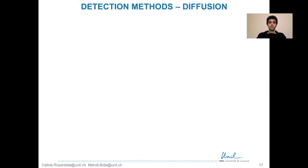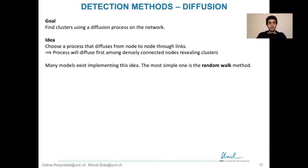Another category of community detection methods uses diffusion processes on networks. The goal is to find clusters using a diffusion process on the network. The idea is to choose a process that diffuses from node to node through links. Since clusters are groups of nodes characterized by a high density of links, we expect the process to diffuse first among the densely connected nodes, revealing the clusters.